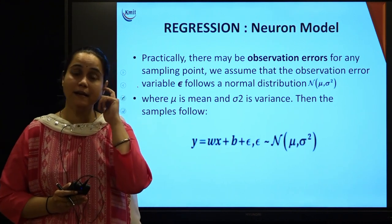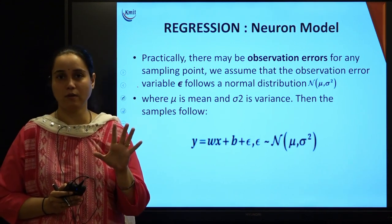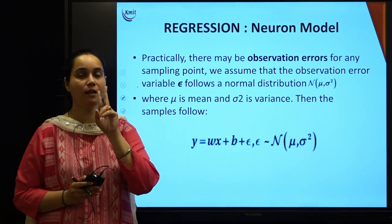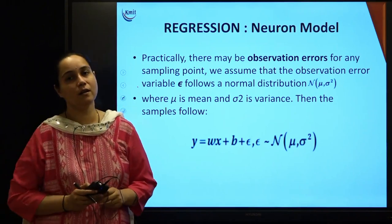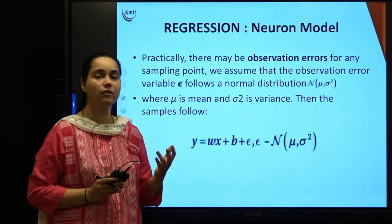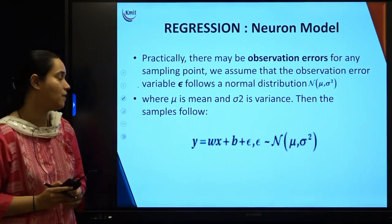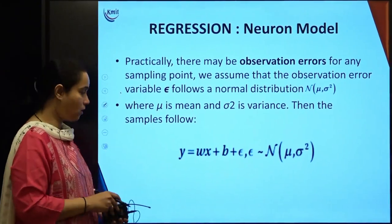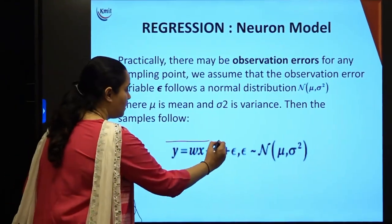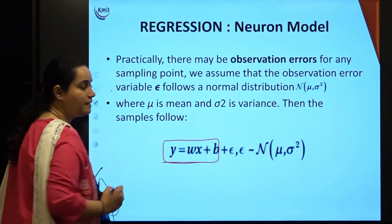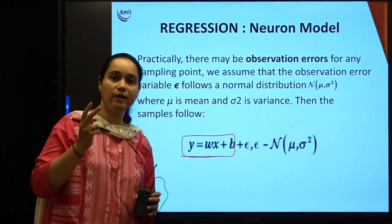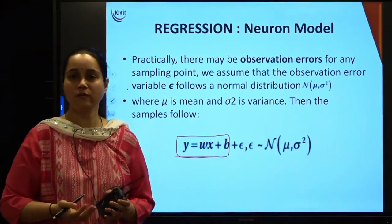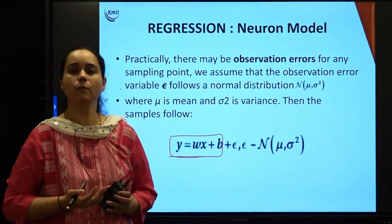We have seen till now an ideal simple linear regression model. We try to obtain our values of weights and biases given any two points on that line of our linear model. We got to know that y is equal to wx plus b, and we require only two points x1, y1 and x2, y2 in order to get the values of the weights and bias. That was an ideal case.